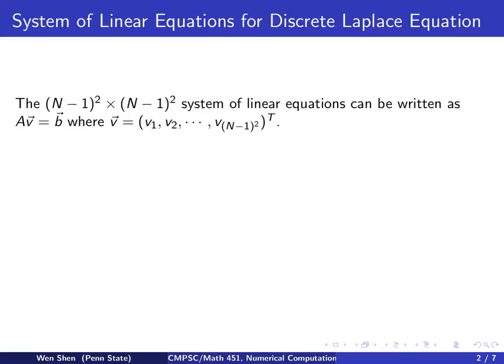Last time we observed that the (N-1)² × (N-1)² system of linear equations can be written in matrix vector form as A times V equals B.